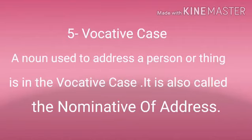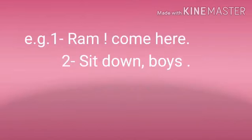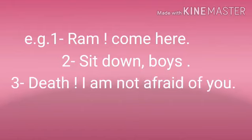The next case, number five, is vocative case. A noun used to address a person or thing is in the vocative case. It is also called the nominative of address. For example: 'Ram, come here,' 'Sit down, boys,' and 'Death, I am not afraid of you.' In these examples, Ram, boys, and Death are in the vocative case, used for addressing a person or thing.